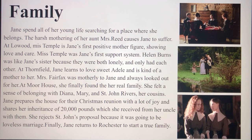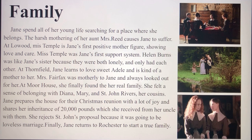At Moor House Jane finally found her real family — her biological cousins. She felt a sense of belonging with Diana, Mary, and St. John. Jane repairs the house for their Christmas reunion with great joy and shares her inheritance of twenty thousand pounds with them. She rejects St. John's proposal because it would be a loveless marriage. Finally Jane returns to Rochester to start a true family. So we see the progression: the abusive Reeds, then surrogate family at Lowood, then her real cousins, and finally her own family with Mr. Rochester, their son, and stepdaughter Adele.